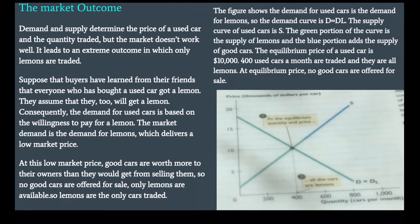Demand and supply determine the price of a used car and quantity traded, but the market doesn't work well — it leads to an extreme outcome in which only lemons are traded. Suppose buyers have learned from friends that everyone who bought a used car got a lemon. They assume they too will get a lemon. Consequently, the demand for used cars is based on the willingness to pay for a lemon, delivering a low market price. At this low price, good cars are worth more to their owners than they would receive from selling them, so no good cars are offered for sale — only lemons are available.